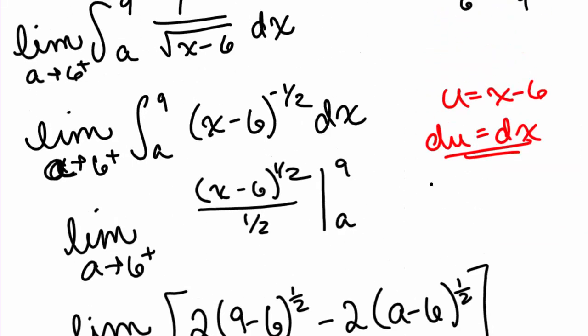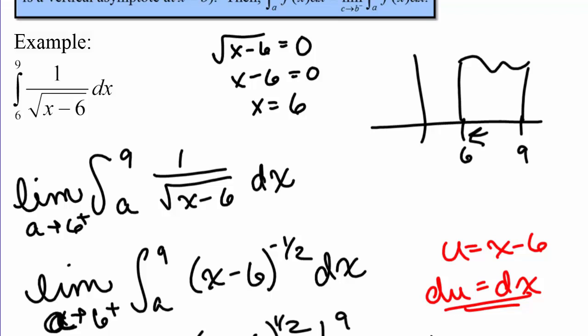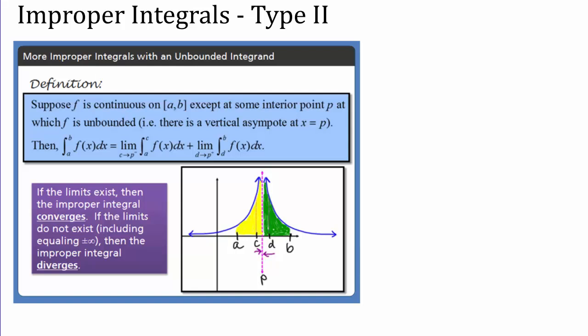We could also integrate over a region that has a vertical asymptote in the middle. In that case, we need two different limits — approaching the asymptote from both sides — so we split into two integrals and take two limits. Any time you need more than one limit, whether going to infinity, having a vertical asymptote in the middle, or having more than one vertical asymptote, it's good practice to split the integral so each piece has only one limit.